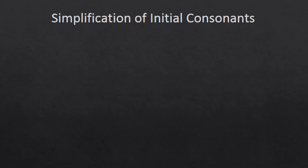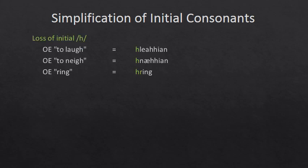These consonant clusters were getting reduced in Middle English. And I think as you go through these, you won't have to memorize anything new — you'll just see, ah, that looks more familiar. So, the loss of an initial H. To laugh was hleachian. Doesn't that sound like laughing? It's a bit of onomatopoeia — a guttural, full-throated laugh.